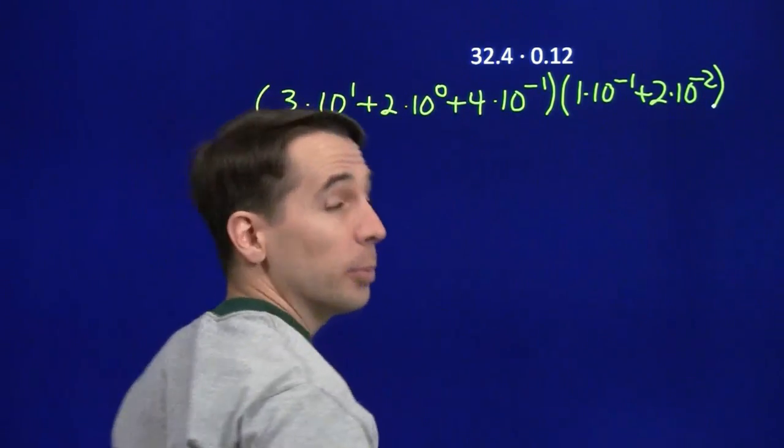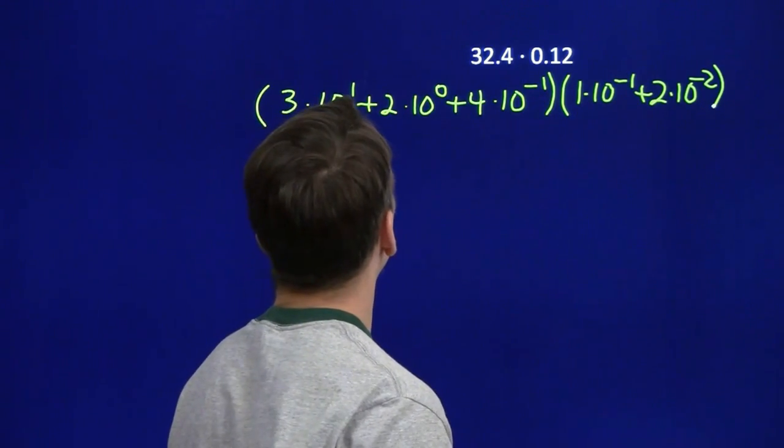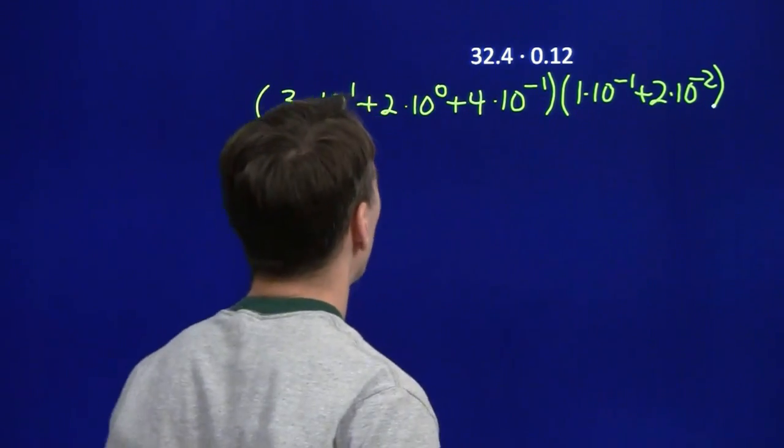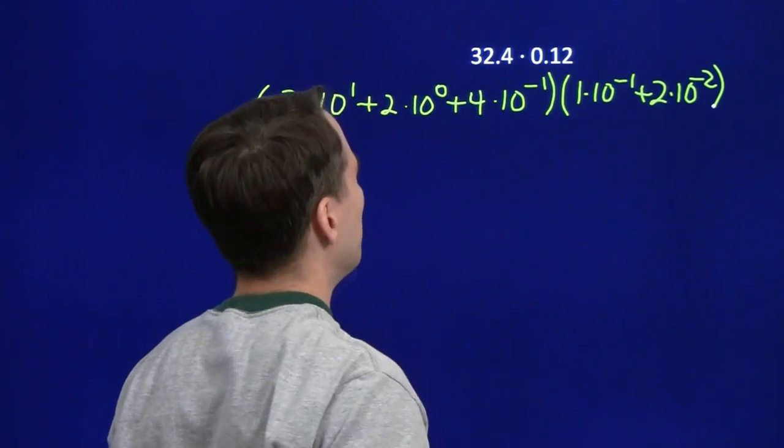So we've got everything written out in terms of their place value, and now what? This is a mess. What do we do with this? We could start breaking out the distributive property, but that'd even make it messier.